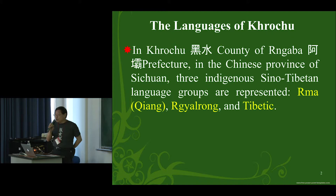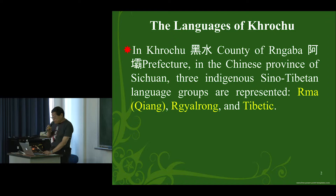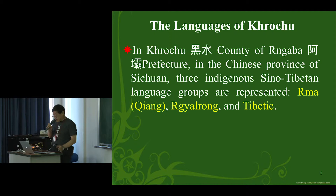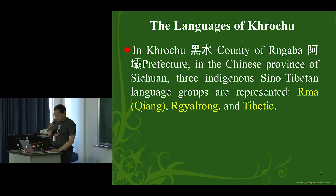I'll begin by introducing you to the languages spoken in this county. This county is called Heishui — meaning 'black water' in Chinese — and the Tibetan word means 'cast iron water.' In this county, three indigenous Sino-Tibetan language groups are represented: the first is Rima, whose external name is Chiang, which is not entirely adequate; and Jiarong, in Tibetan.